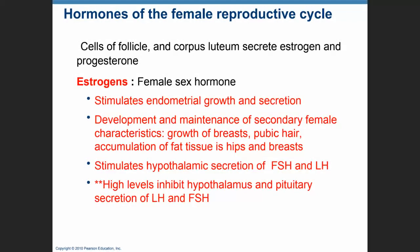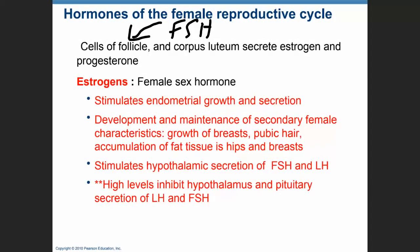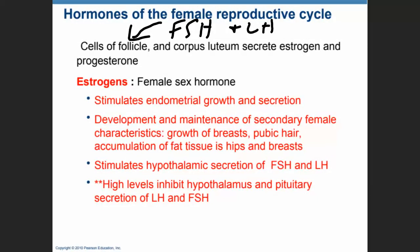The cells stimulated by FSH are going to be the follicular cells of the ovarian follicles. FSH and LH are also going to stimulate the corpus luteum into secreting estrogen and progesterone. So FSH and LH stimulate the follicles first and then later the corpus luteum into secreting the female sex hormones, estrogen and progesterone.